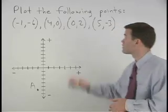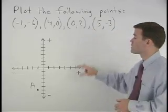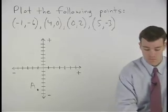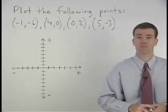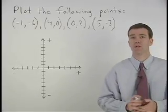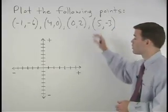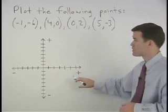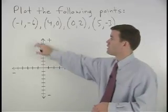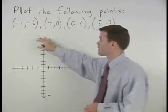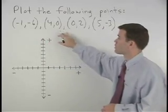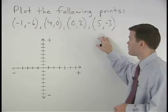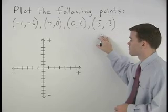Here we're asked to plot the following points on the coordinate system: negative 1, negative 6; 4, 0; 0, 2; and 5, negative 3.